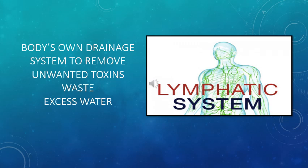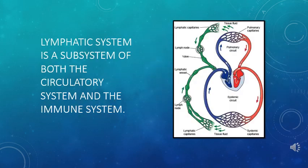The lymphatic system is a drainage system, or we can say the body's own sewage system, to remove unwanted toxins, waste, and excess water from the body. The lymphatic system is actually a subsystem of both the circulatory system and the immune system.